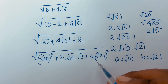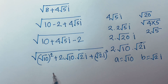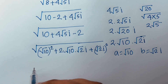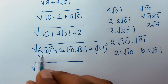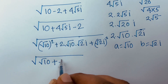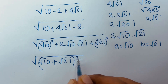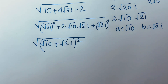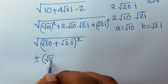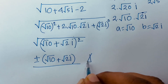Since this is a and b, we apply the rule a² + 2ab + b² = (a+b)². So the expression inside the square root is (√10 + √2·i)². The square root cancels and our final answer is ±(√10 + √2·i).